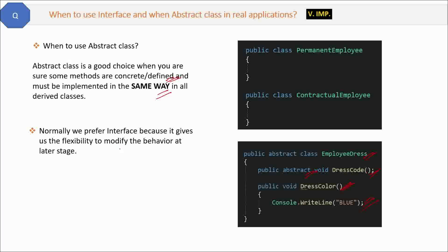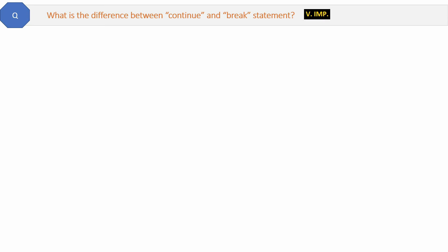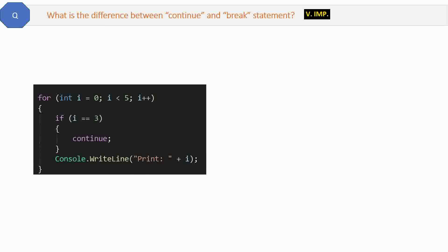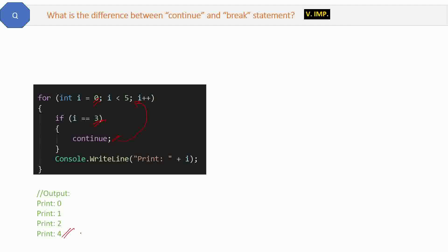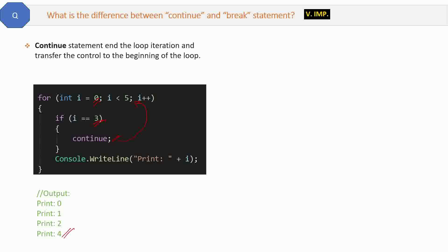Question six: What is the difference between continue and break statements? For the 'continue' keyword — when a loop starts from zero and prints values, but when the variable i equals three, it enters the if block and sees the 'continue' keyword. Continue stops execution at that point and transfers control back to the start of the loop, skipping the current iteration. So the output skips three and prints zero, one, two, then four.